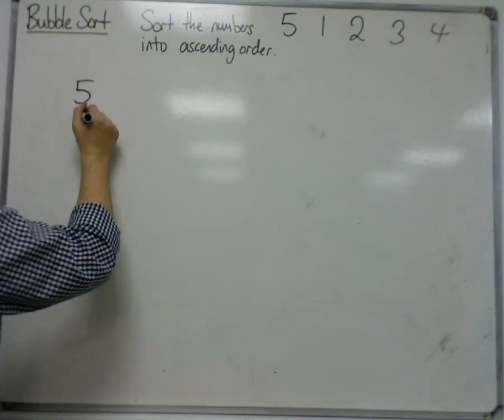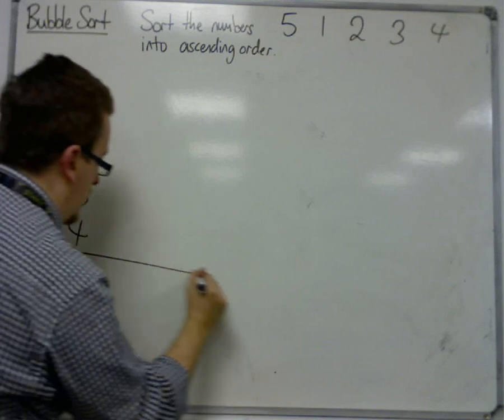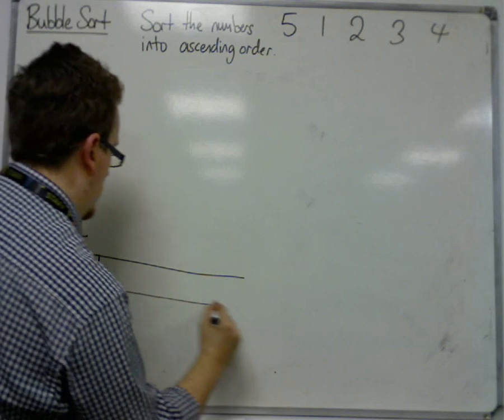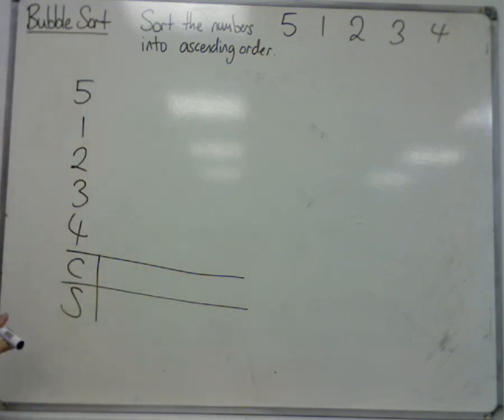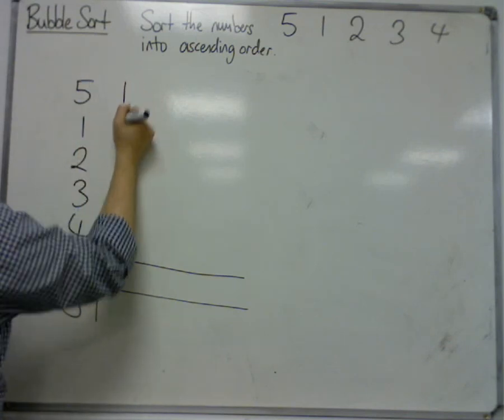So I'm going to write them in my column, and I'm going to be counting the comparisons and swaps as I go. So first of all, we look at comparing 5 and 1. They're in the wrong order, so we've got to write 1.